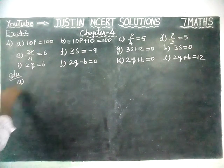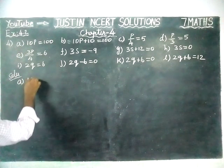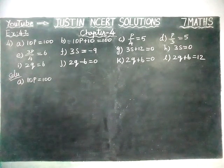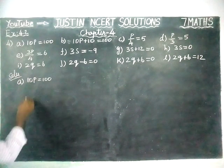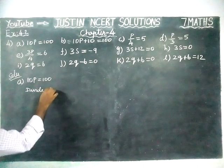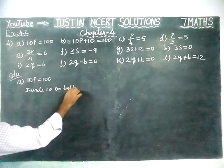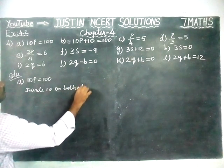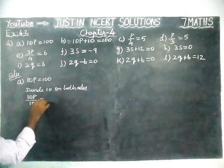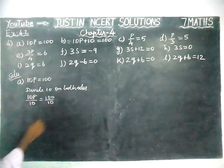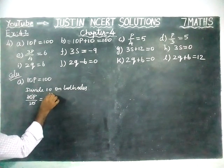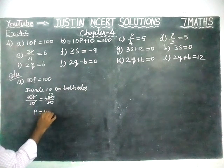Part A: 10P equal to 100. We are going to divide 10 on both sides. 10P divided by 10 is equal to 100 divided by 10. 10 gets cancelled. 1 ten is 10, 10 tens are 100. So, P is equal to 10.